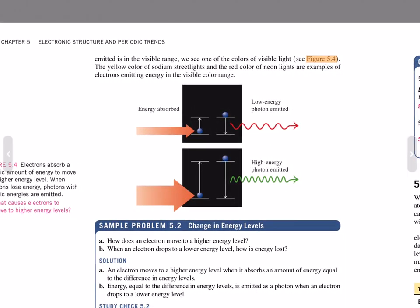If the emitted energy is in the visible range, we can see the colors of visible light. The yellow color of sodium street lamps and the red color of neon lights are examples of electrons emitting energy in the visible color range.